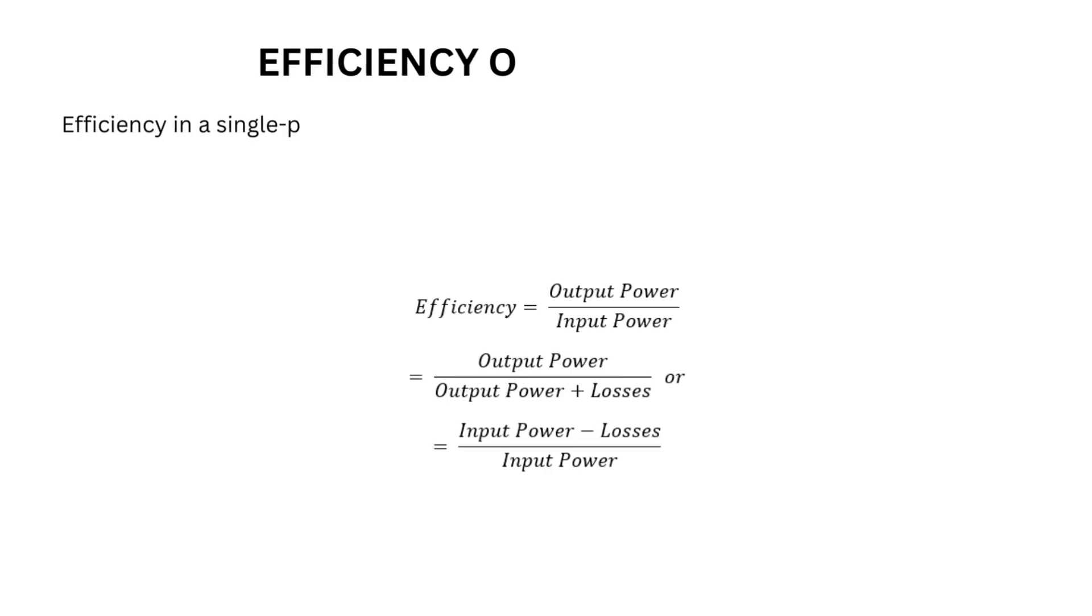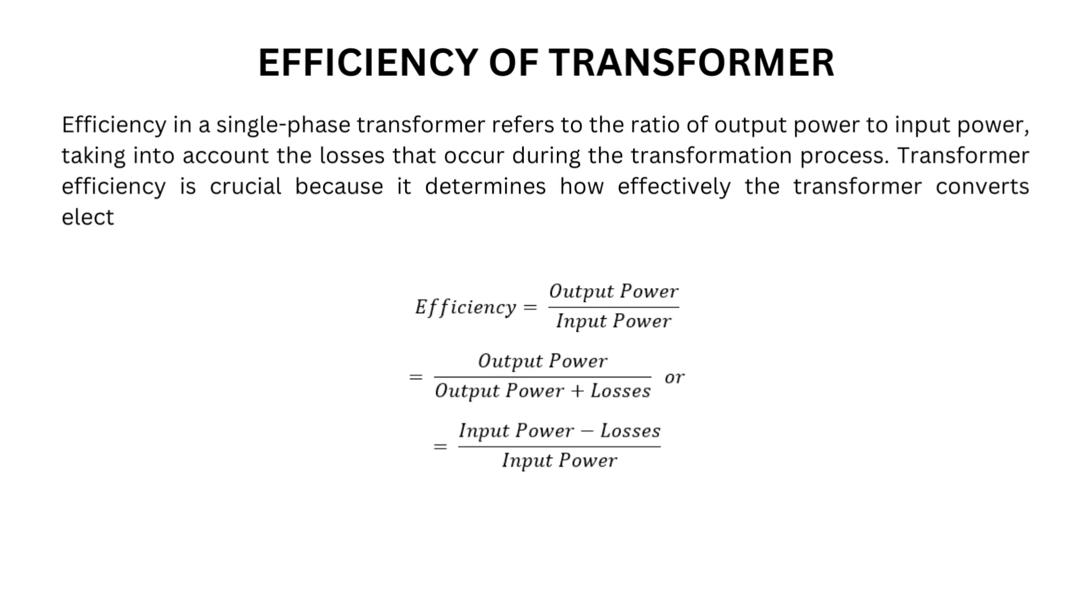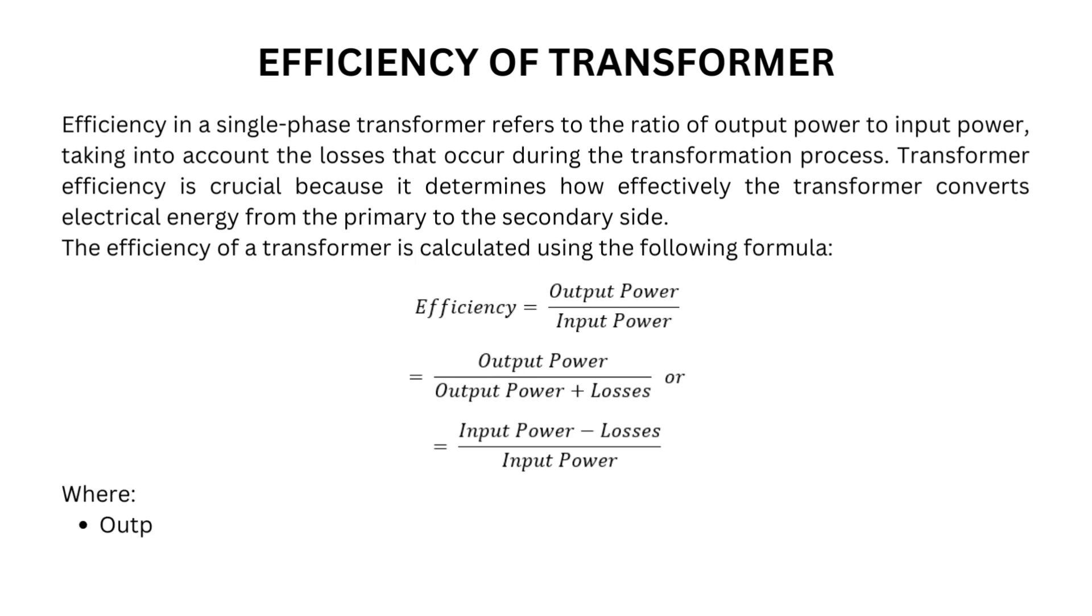Efficiency in a single-phase transformer refers to the ratio of output power to input power, taking into account the losses that occur during the transformation process. Transformer efficiency is crucial because it determines how effectively the transformer converts electrical energy from the primary to the secondary side. The efficiency of a transformer is calculated using the following formula given below.